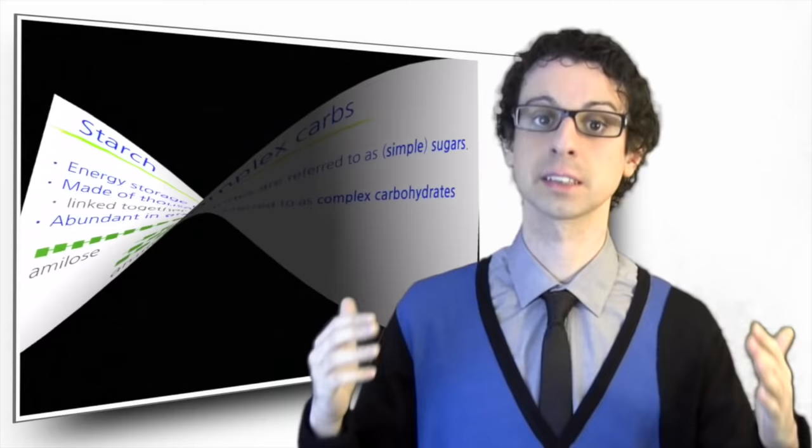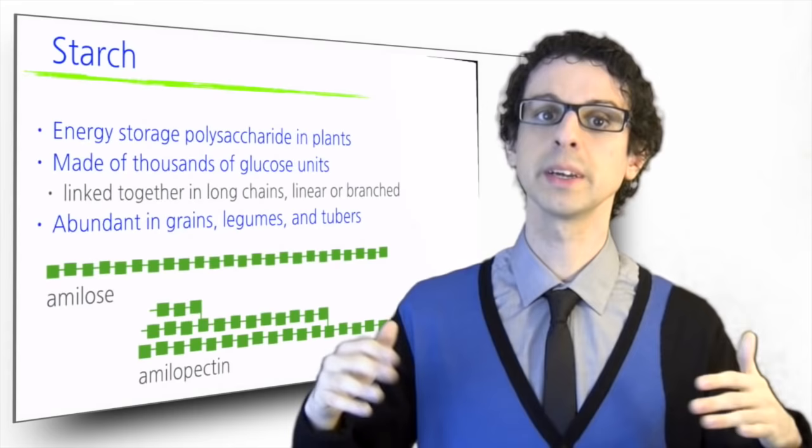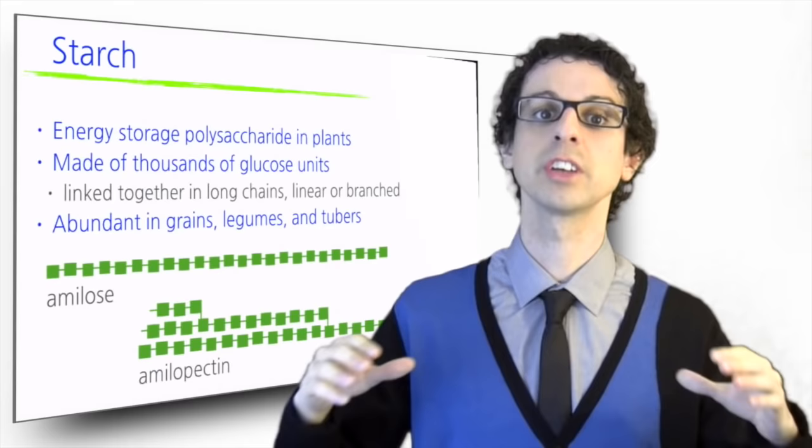The most abundant polysaccharide in plants is starch, which is the carbohydrate plants built for energy storage. Starch is made of thousands of molecules of glucose linked together in long chains, which can be linear or branched. It is abundant in grains, legumes, and tubers such as potatoes and yams.